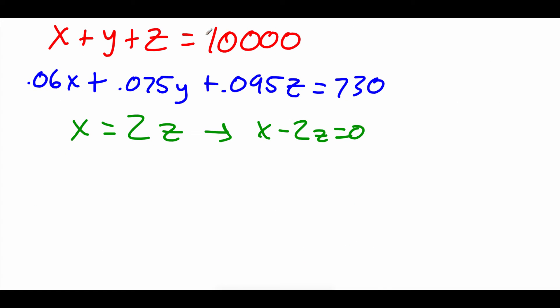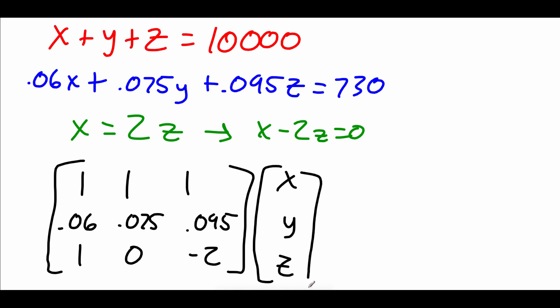Now I'm going to take all of this information and set up our different matrices. So I'm going to start with that coefficient matrix. So just looking at all of our variables, coefficient matrix, we'll go 1, 1, 1, 0.06, 0.075, and 0.095. Bottom row would go 1, 0, negative 2. So there's our coefficient matrix. Let's set up our XYZ variable matrix, and then our equals to stuff on the right-hand side. We've got 10,000, 730, and 0.